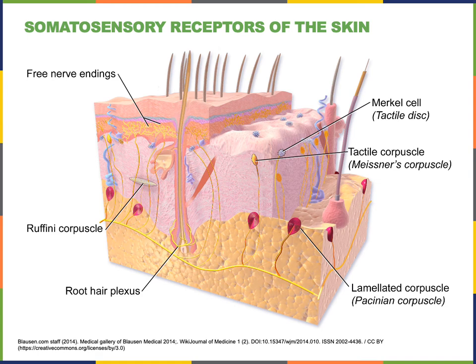The root hair plexus is another example of free nerve endings that are somatosensory receptors of the skin. The root hair plexus are free nerve endings surrounding hair follicles that detect movement of the hair.